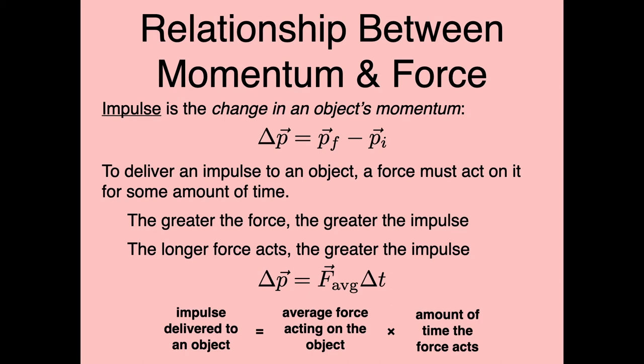This next result I won't derive in full — that'll come in Physics 45. For now I'll just state it and explain it conceptually. Let's talk about something called impulse. Impulse is defined as the change in an object's momentum — delta p. Delta p equals p final minus p initial. It's the final momentum minus the initial momentum, and it bears repeating that this is a vector quantity.